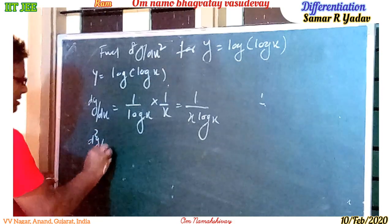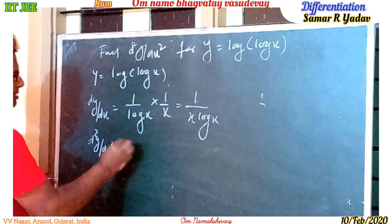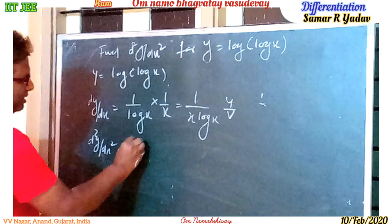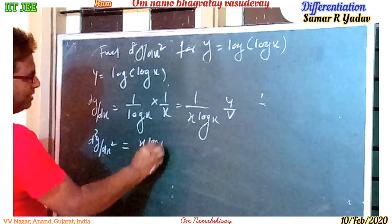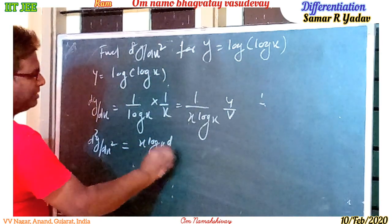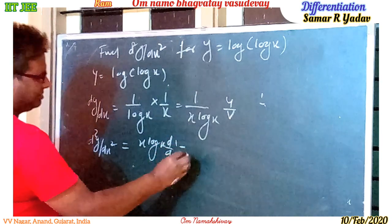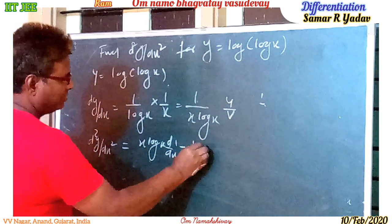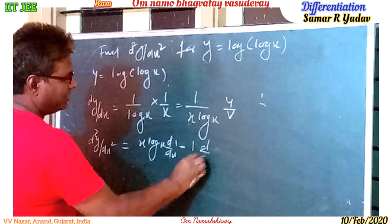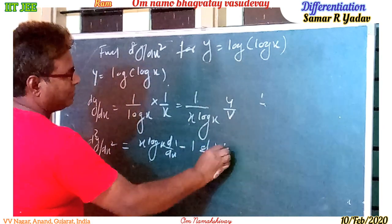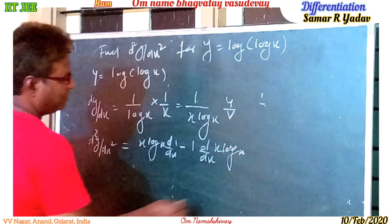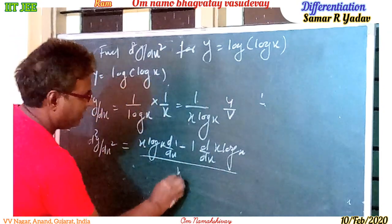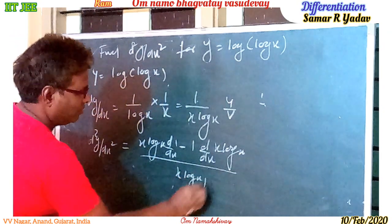Now again we take the derivative, that is d²y/dx². Using the quotient rule with u over v, where the denominator is x log x and we differentiate 1 in the numerator, minus 1 times d/dx of x log x, upon x log x. Now simplifying, x log x cancels here.